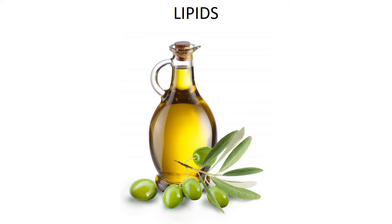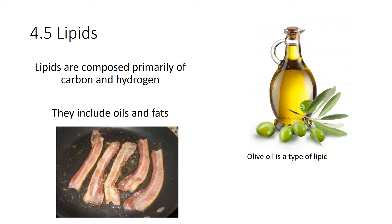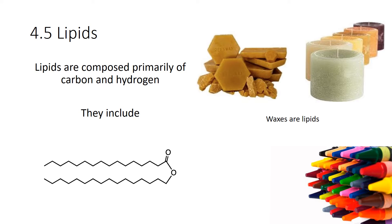Lipids are actually an incredibly diverse group of molecules. They're composed mostly of carbon and hydrogen, and they include things like oils, which you would see in olive oil, and also the more familiar fats, like you would get from bacon grease. They also include waxes, so if you've ever seen candles or beeswax or even crayons, those are also lipids.